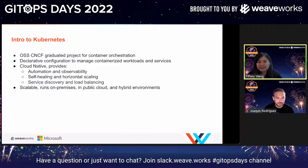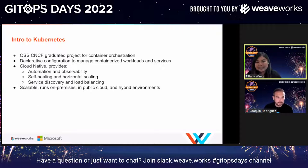Kubernetes provides automation and observability, self-healing and horizontal scaling, and service discovery and load balancing. Kubernetes is scalable and can run on-premise, in public cloud, and a mix of both, so you can have a similar deployment experience regardless of your cloud provider.